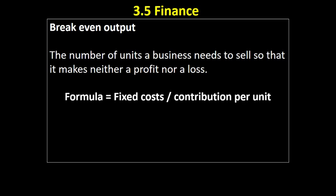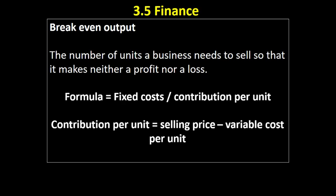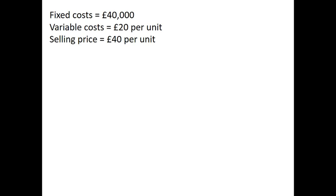The first method of calculating break-even is by using a formula. The formula is very simple: fixed cost divided by contribution per unit. Contribution per unit is calculated by subtracting the variable cost per unit from the selling price. The key thing to remember is that you can calculate the break-even output with this formula: fixed cost divided by contribution per unit.